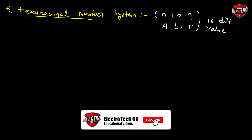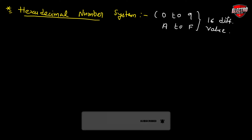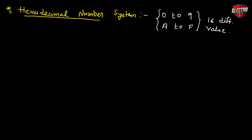These 16 values are used to represent a hexadecimal number. Here A to F indicate: A is equal to 10, B is equal to 11, C is equal to 12, D is equal to 13, E is equal to 14, and F indicates 15 in decimal number. These are the decimal number equivalents of the hexadecimal symbols.